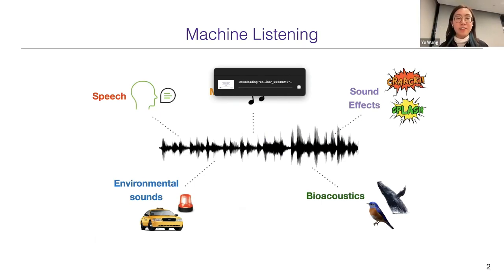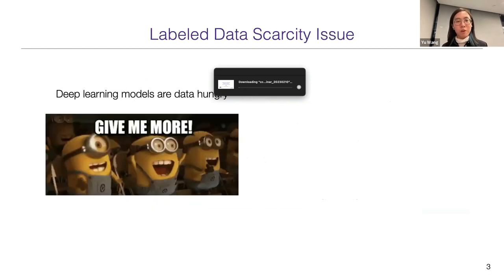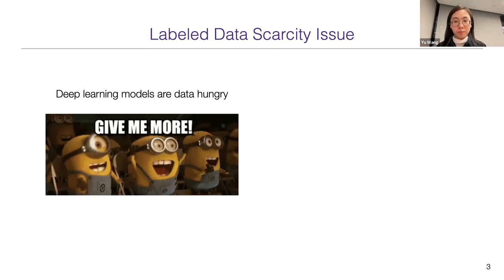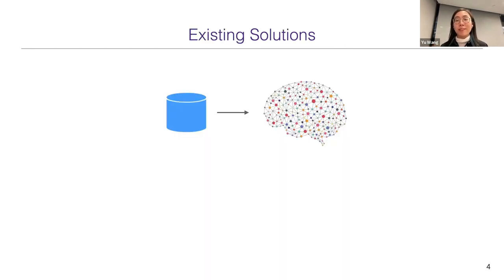Machine listening is trying to enable machines to understand and perceive audio as humans do. Applications range from music and speech to bioacoustics. Like many other fields in AI research, deep learning has been a mainstream methodology in machine listening, achieving many state-of-the-art results. However, deep learning models are data-hungry — they require a lot of labeled data for training, but annotating audio is particularly hard. We need to listen to audio examples, audio events often overlap, and it often requires expert knowledge.